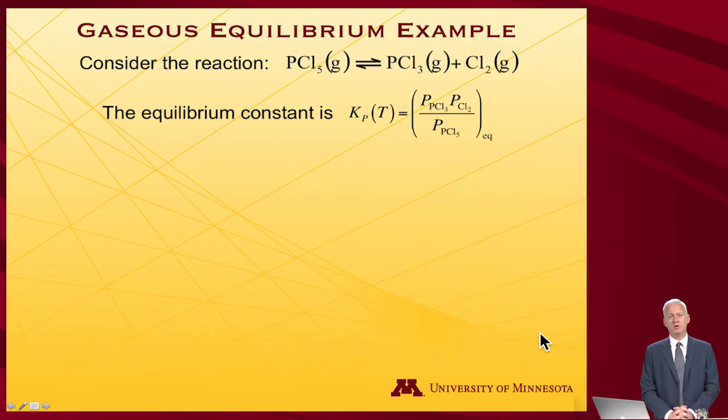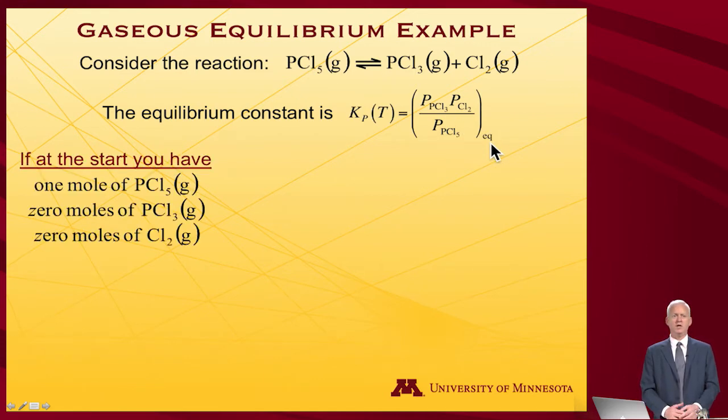The equilibrium constant, the pressure equilibrium constant, is defined as the product of the pressures of the products raised to their respective stoichiometric powers (those are one in this instance) divided by the pressure of the reactant. There's only one reactant in this case, as measured at equilibrium.